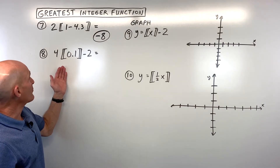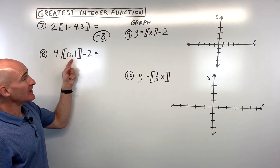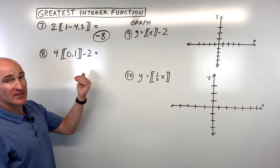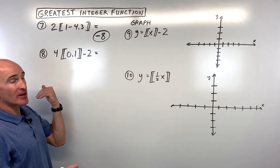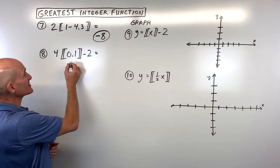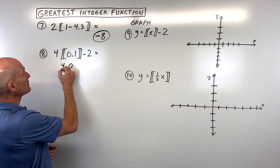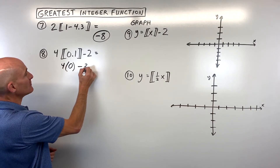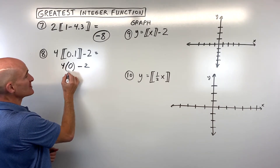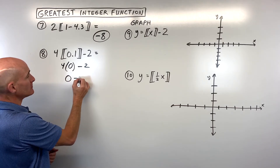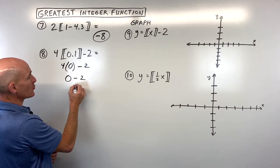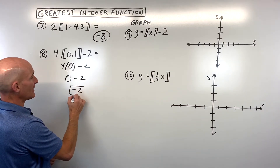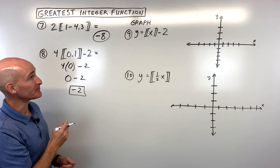For number 8, start on the inside. 0.1 rounds to the left on the number line — that gives us 0. Then 4 times 0 is 0. And 0 minus 2 is negative 2.